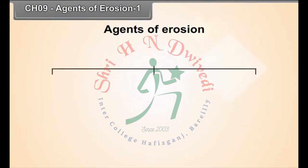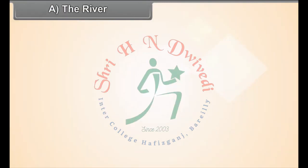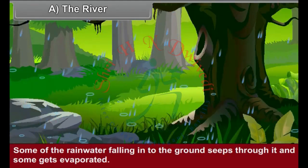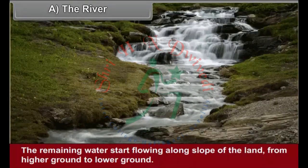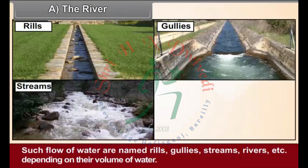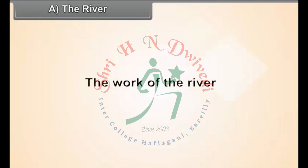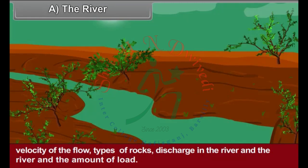In this chapter, we shall study the work of river, wind and glaciers. Some of the rainwater falling onto the ground seeps through it and some gets evaporated. The remaining water starts flowing along the slope of the land. From higher ground to lower ground, such flows of water are named rills, gullies, streams, rivers, etc., depending on their volume of water. The intensity of the work of a river depends on factors like the slope of the land, velocity of the flow, types of rocks, discharge in the river and the amount of load.